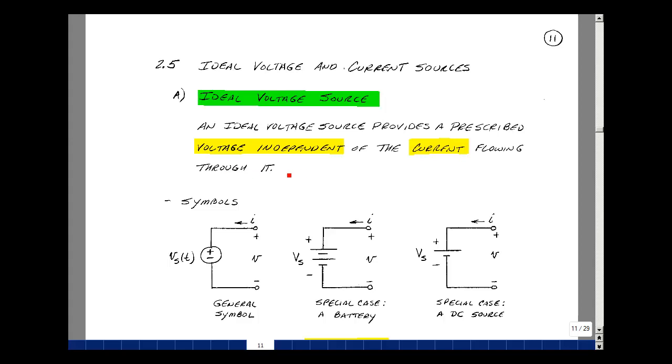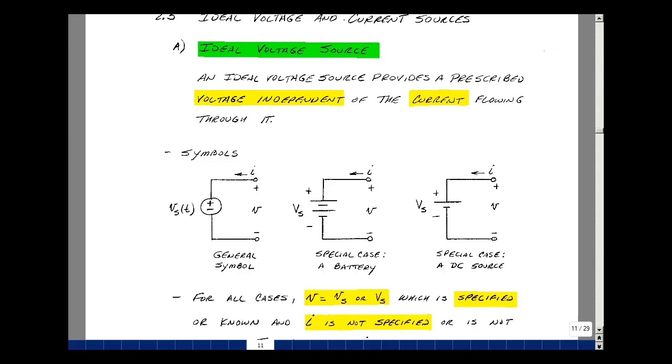It provides a prescribed voltage independent of the current flowing through it. Here are some common symbols for voltage sources. The most general one is a circle with a plus and minus sign inside of it. I'll extend these wires out and call this voltage V, plus by the plus, minus by the minus. I'll define the current is going in the plus terminal. That'll be our default notation if we don't know anything else. And this is really any voltage versus time.